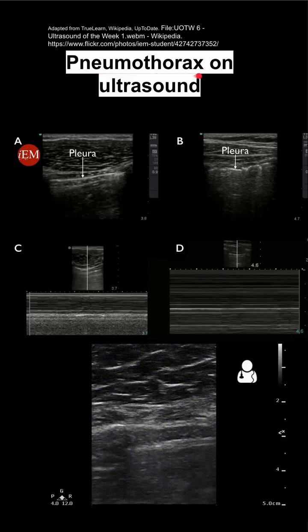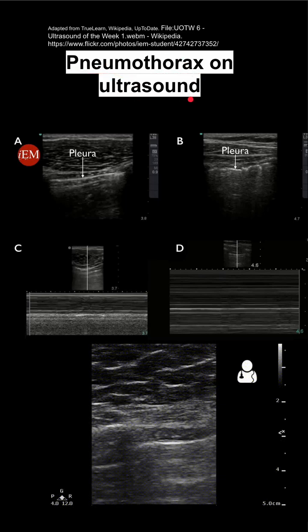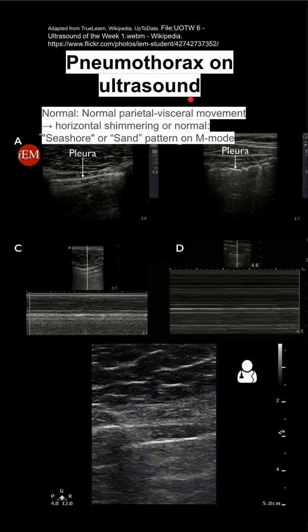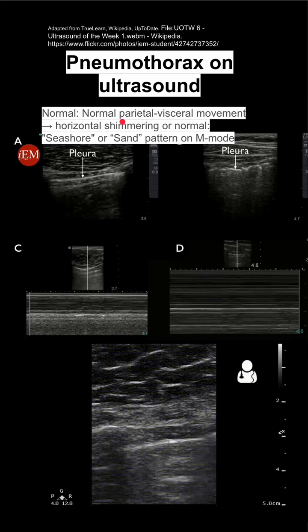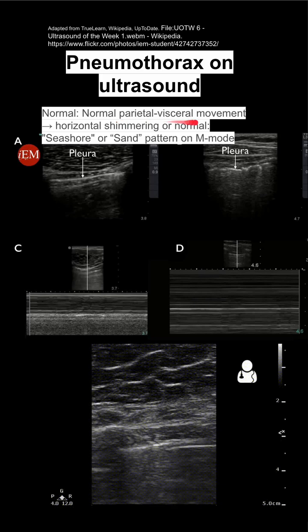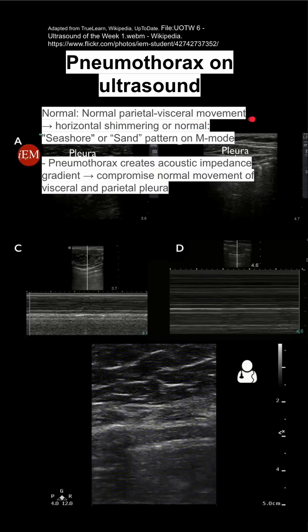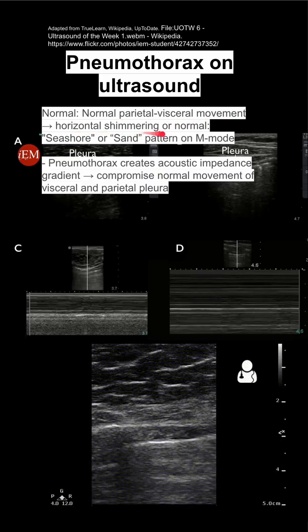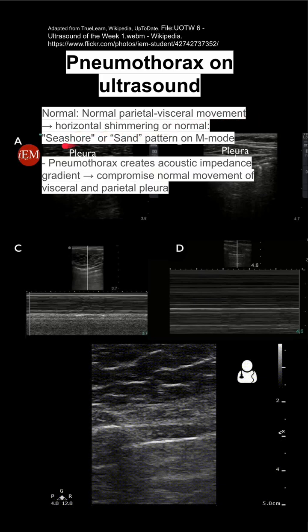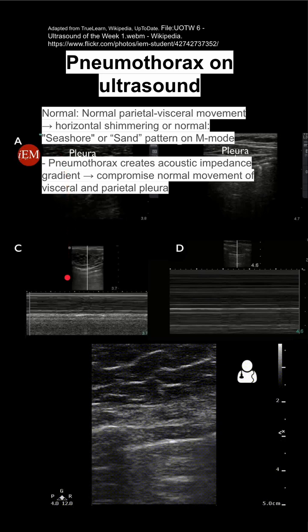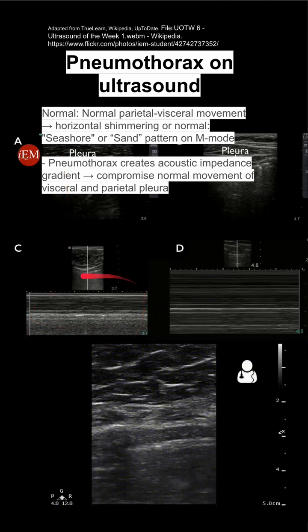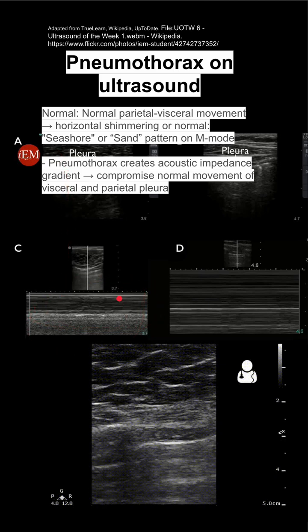This is how a pneumothorax appears on an ultrasound. In a normal lung, you'll have a normal parietal-visceral movement gradient. You'll have normal shimmering, and in M-mode you'll have a seashore or sand pattern as shown here.